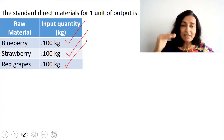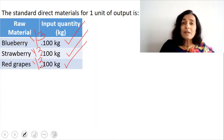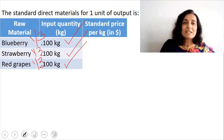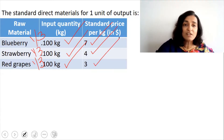Each raw material has a one-third share — they are used in equal proportion. The standard price per kg is $7 for blueberry, $4 for strawberry, and $3 for red grapes.